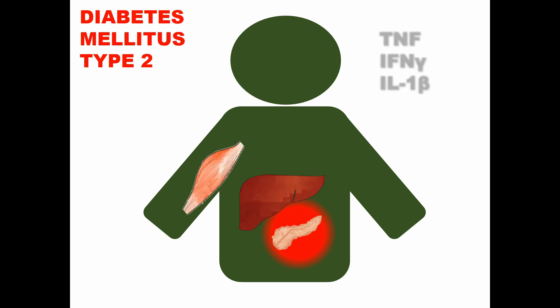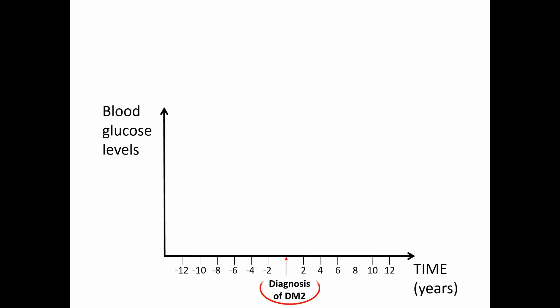What causes DM2? It is a multifactorial disease, but what is known is that pro-inflammatory mediators, such as TNF, interferon gamma, and IL-1-beta, are present in higher levels in the blood of people with diabetes and that they promote insulin resistance. Prospective studies using a vast number of patients have shown that blood glucose levels gradually rise starting years to decades before diagnosis of DM2, but shortly before diagnosis, blood glucose levels steeply rise, suggesting an unknown event that triggers loss of glycemic control.